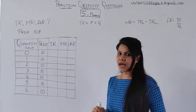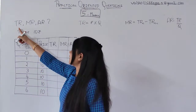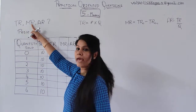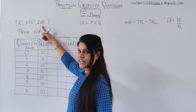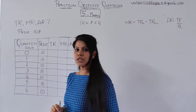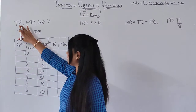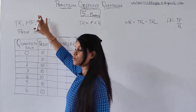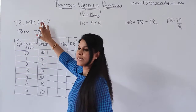The question asks you to compute TR which is total revenue, MR which is marginal revenue, and AR which is average revenue. They have also given the price, which is 10 rupees. So you have to find out total revenue, marginal revenue, and compute AR.